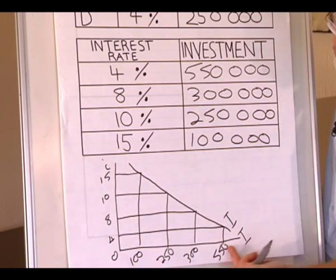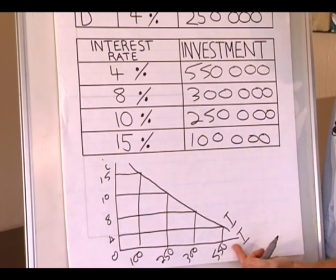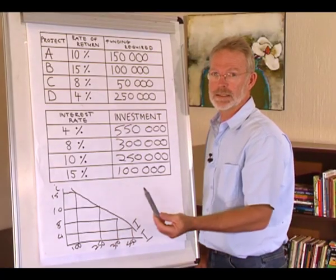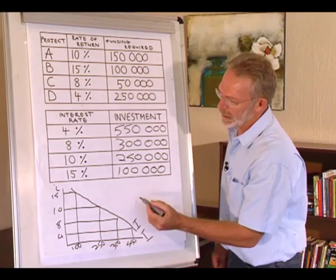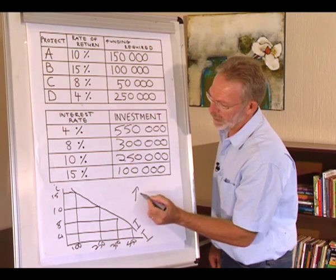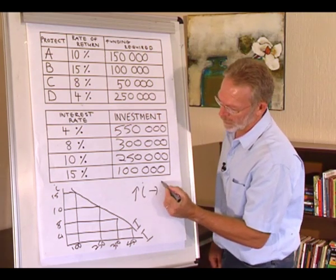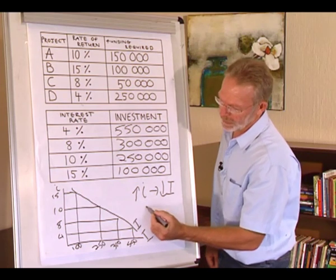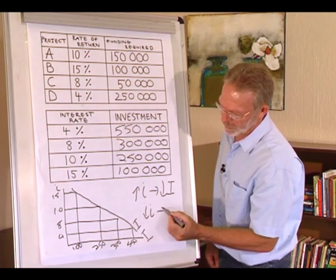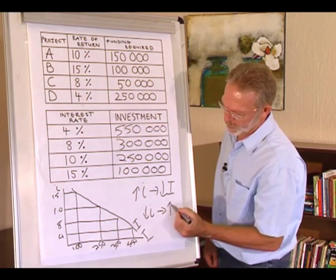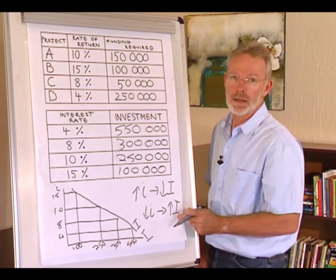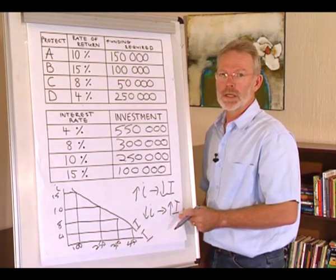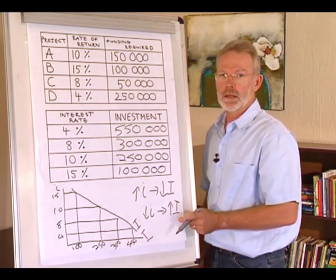It shows the inverse relationship between interest rate and investment — an inverse relationship, yes, that's a negative relationship. In other words, if the interest rate goes up, investment will decrease, and if the interest rate goes down, investment will increase. This is one of the more important relationships in economics.